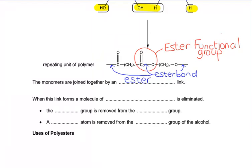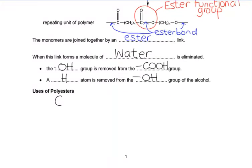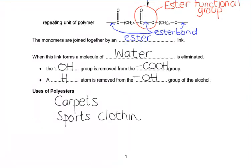When this link forms, because in this case we lost water, we say a molecule of water is eliminated. The OH group is removed from the carboxylic acid, and a hydrogen atom is removed from the hydroxyl group of the alcohol. This is how we form polyester. Polyesters have lots of uses - you'll find them in carpet fibres, in sports clothing such as your gym kit, and in medical treatments like shunts. Clothing is probably one of the biggest uses of polyesters.